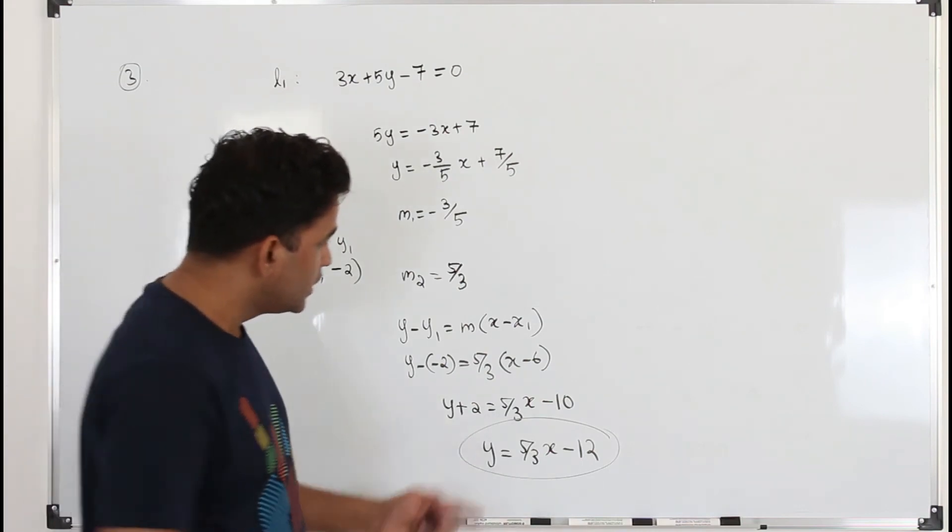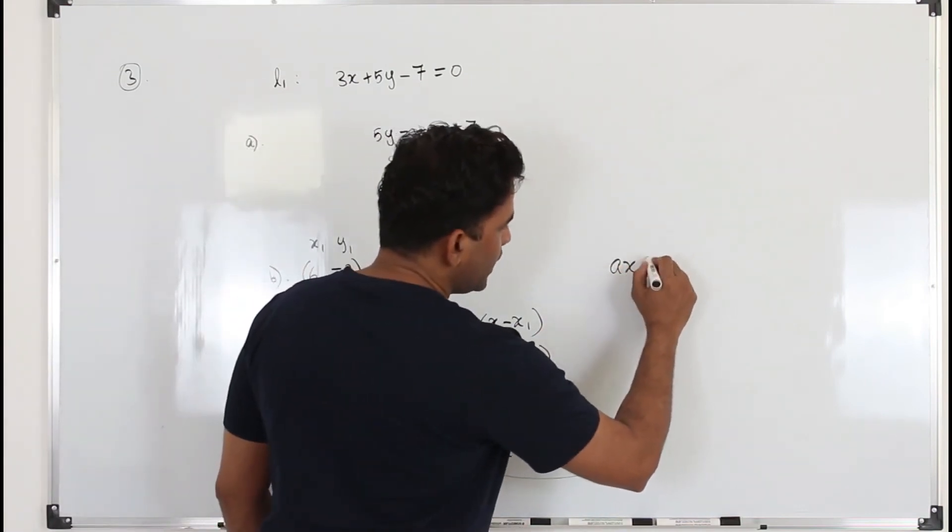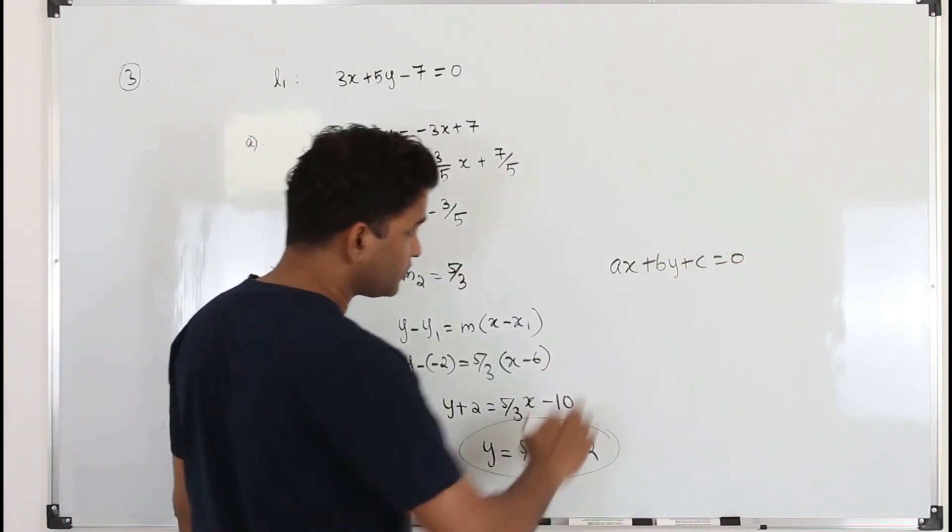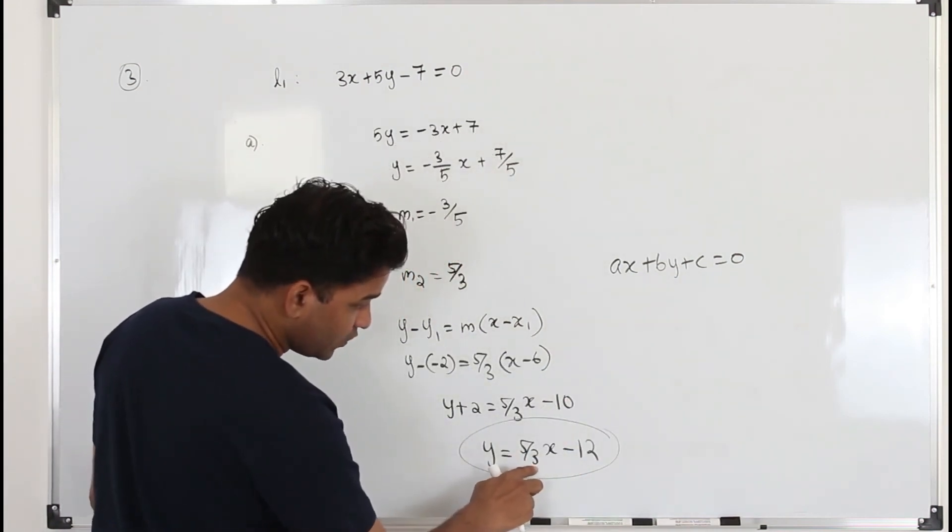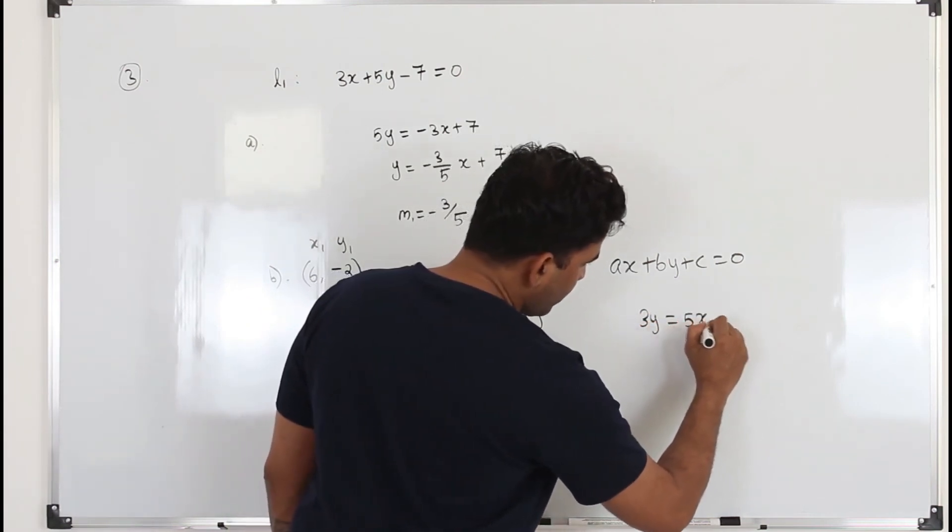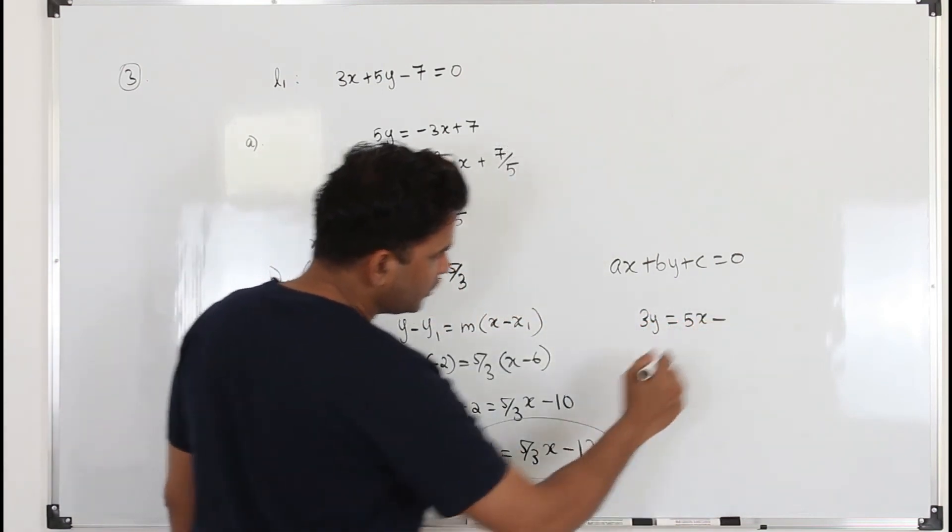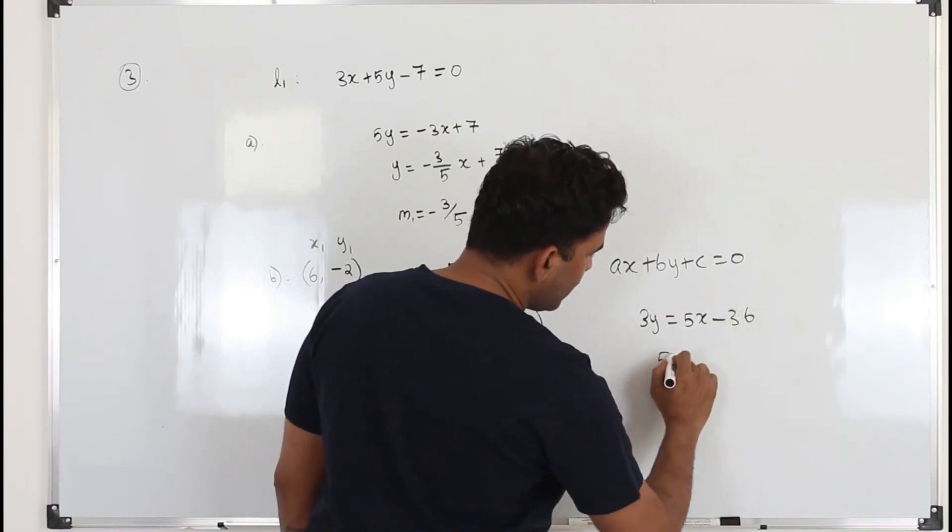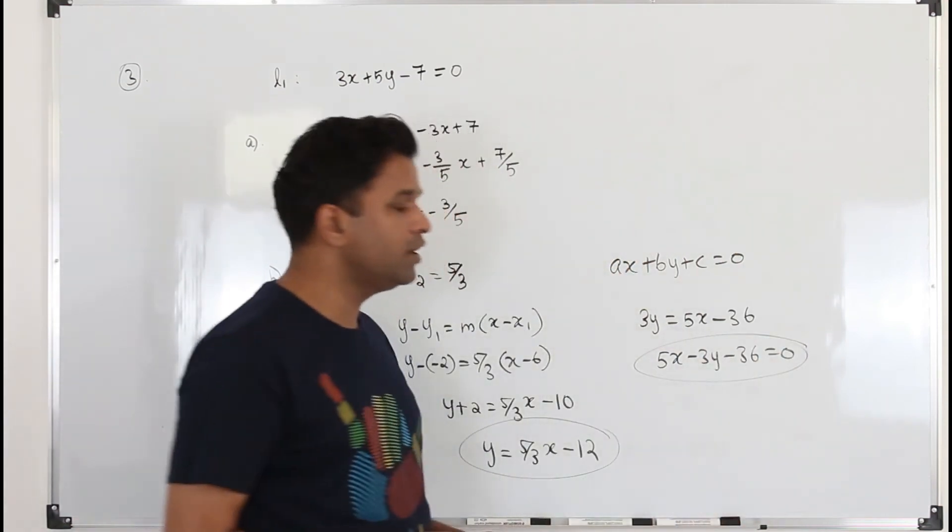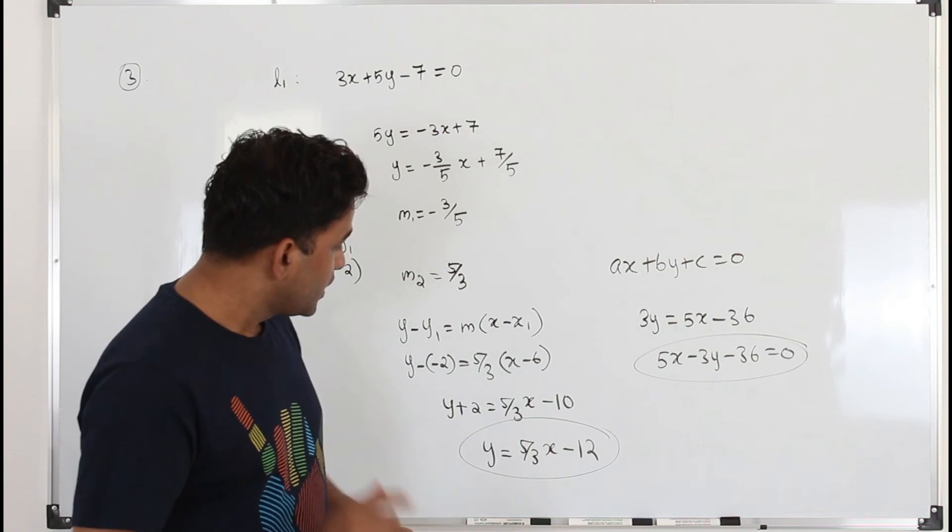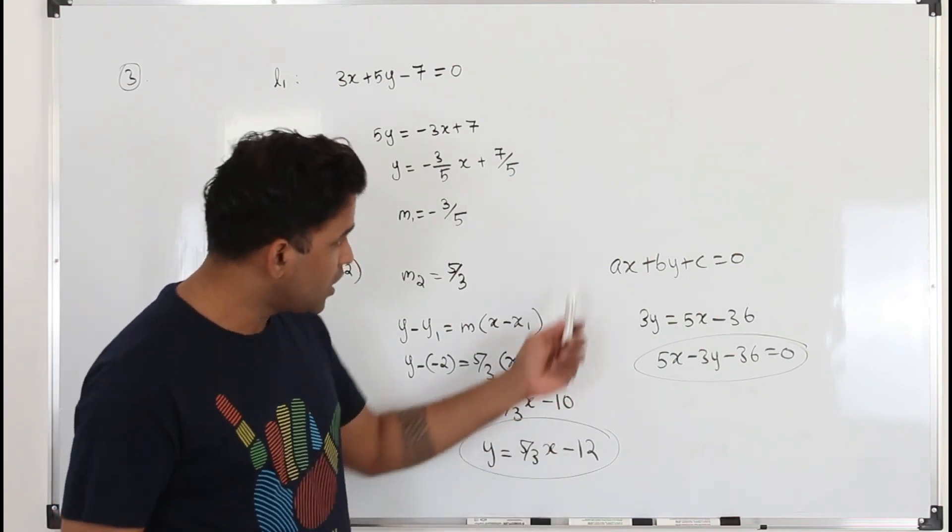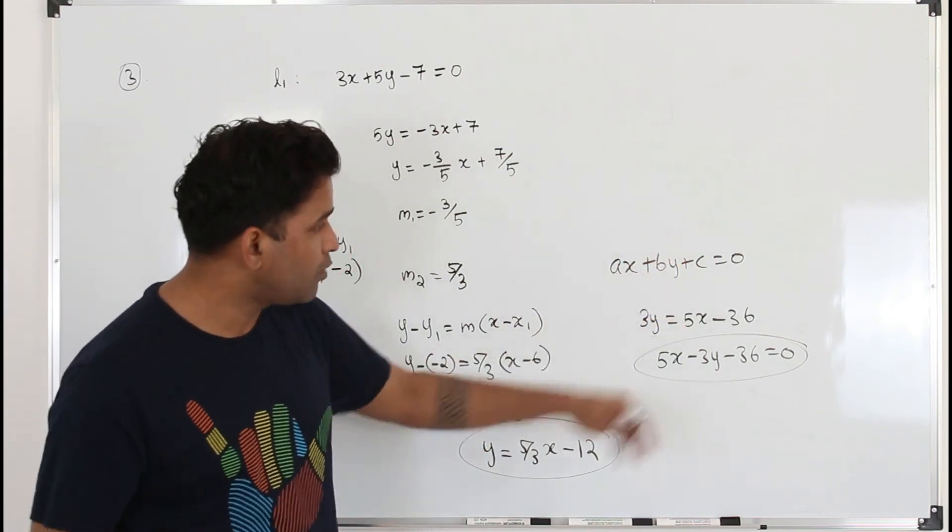In certain questions, they want the equation in this form, ax plus by plus c equals 0, where a, b, c are integers. In that case, you have to get rid of this fraction. Multiply everything by 3. 3y equals 5x minus 36. Put everything on one side. 5x minus 3y minus 36 is 0. So that's why you need to read the question carefully. Because the question wants you to write the equation either in this form, y equals mx plus c, or in this form. So you need to write it accordingly.